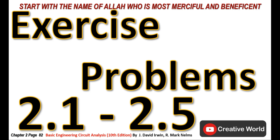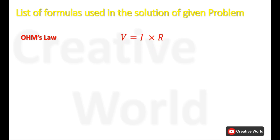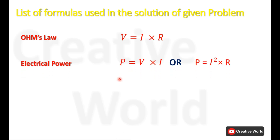Welcome to Creative World. In this video, we will solve Chapter 2 exercise problems from 2.1 to 2.5. While solving these problems, we will be using Ohm's law. According to Ohm's law, voltage across any resistance R is always equal to the product of current through that resistance and the value of resistance. We will also be using the electrical power formula. The basic equation is P equal to V multiplied by I, or P equal to I square multiplied by R.